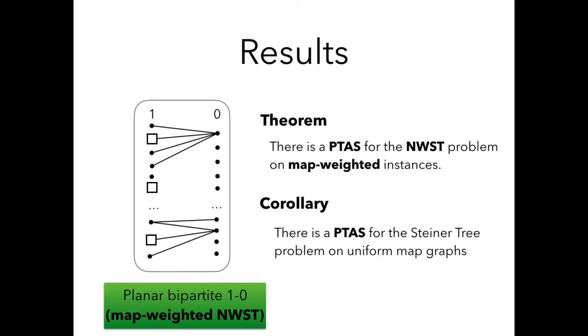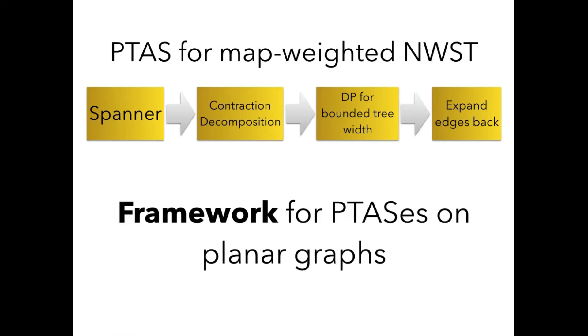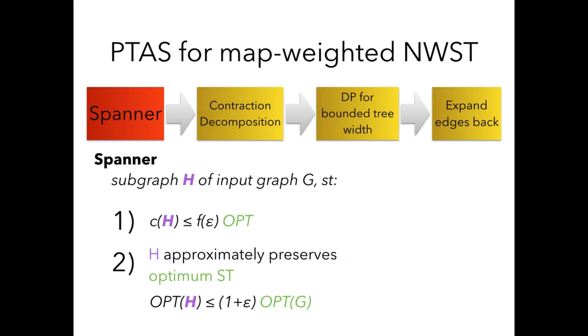This is our reduction. What we then show? We then show a PTAS for the node-weighted Steiner tree problem on those map-weighted instances, and as a corollary we have a PTAS for Steiner tree on uniform map graphs. How we prove the theorem? We prove the theorem by giving this PTAS for map-weighted instances, and we do that by following the well-established framework for PTASes on planar graphs. This framework has four steps in those yellow boxes here, and the first step is the spanner construction, which is the most difficult.